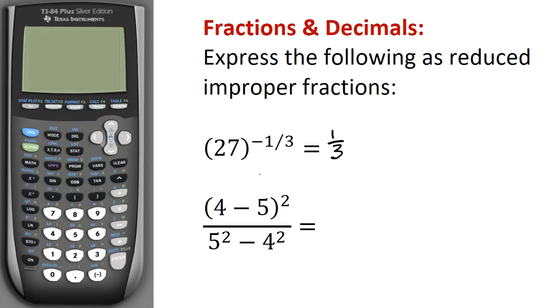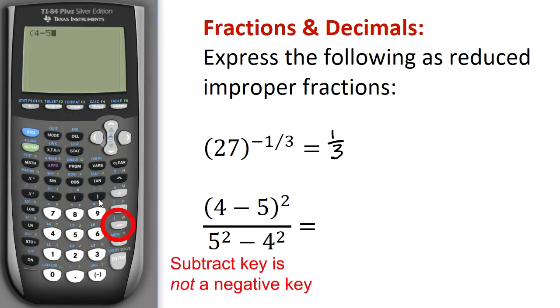Next, I'm going to calculate this fraction, (4 - 5)² over 5² - 4², and I'm going to have to be careful here with my numerator and denominator. So I'm going to use the parentheses key, 4 minus 5, close the parentheses, squared.